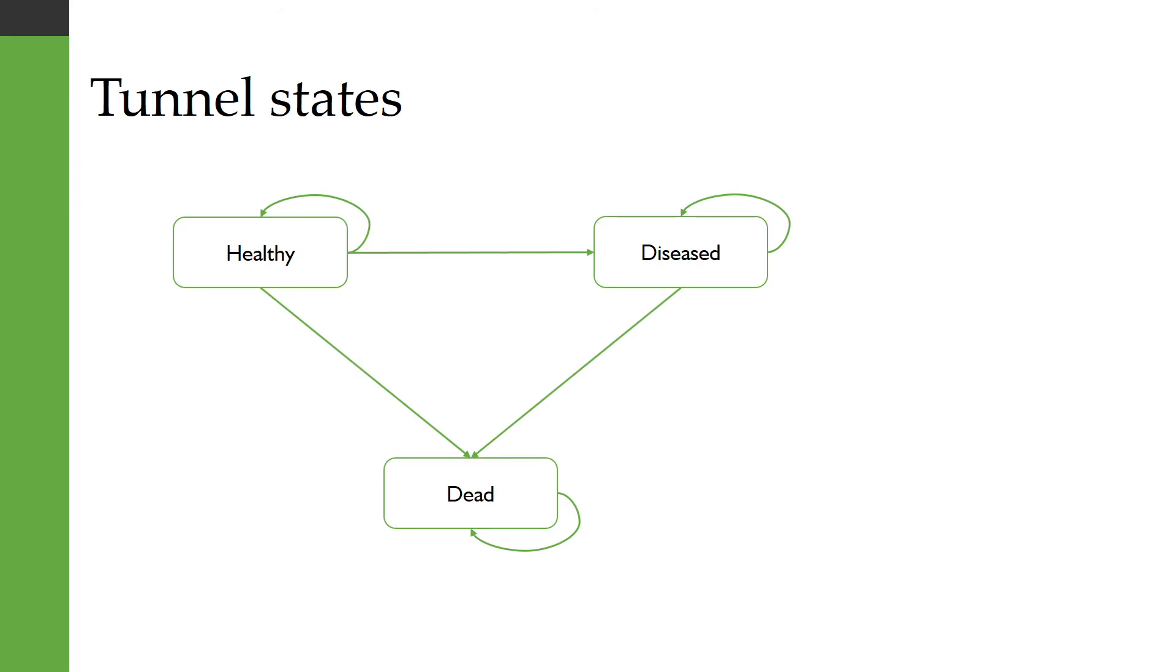So here we've got a three-state model with healthy and diseased and dead. It's not possible to recover from the disease so we can only go from being healthy to being diseased or from healthy to being dead and then when we're in the diseased state we can either remain in the diseased state or transition to death.